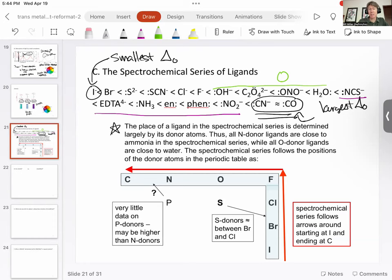The spectrochemical series is something that you will see - actually the picture down here does it in the opposite direction, so it's going increasing delta naught. But what you can see is carbon will have the largest crystal field splitting energy.